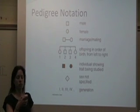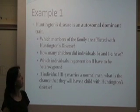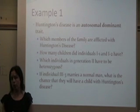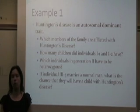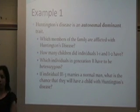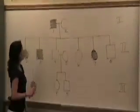We're going to do two examples. This is the first one for Huntington's disease. Huntington's disease is an autosomal dominant trait. I drew the pedigree on the board over here so that we can look at it and I can write on it as well.